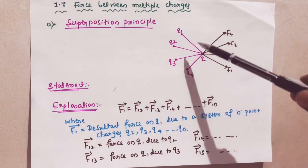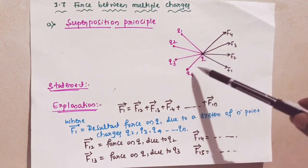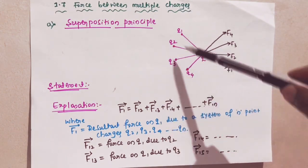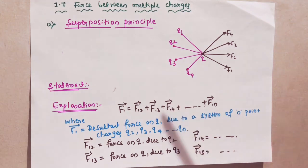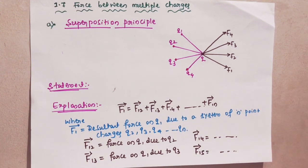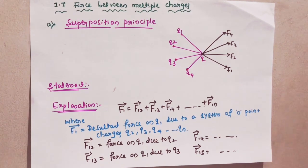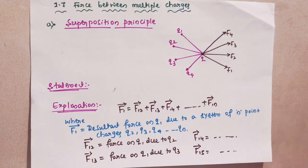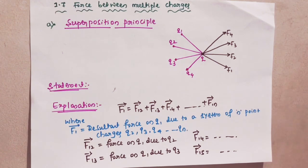Here suppose if I consider these are the n number of charges. It states that when a number of charges are interacting then the total force on a given charge is equal to the vector sum of the forces acting on it due to the remaining charges. In this case the individual forces are not affected due to the presence of other charges.